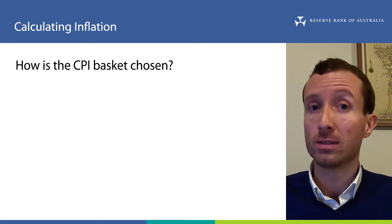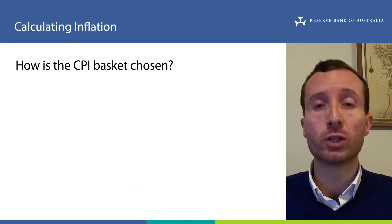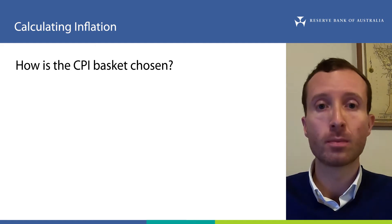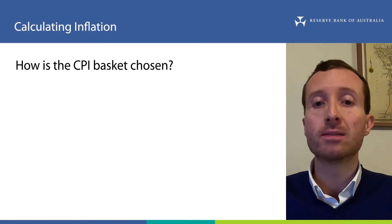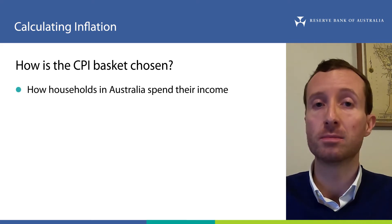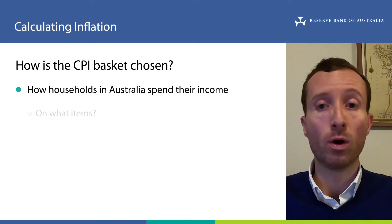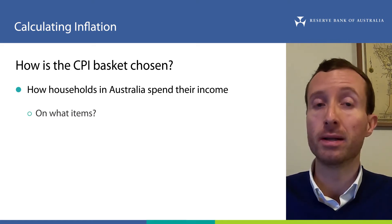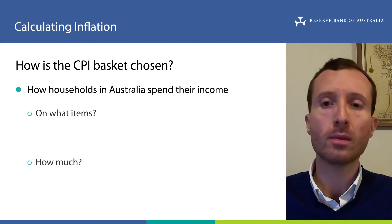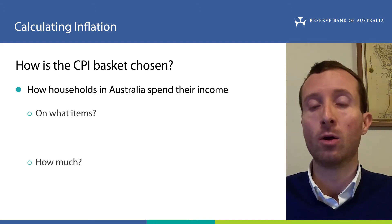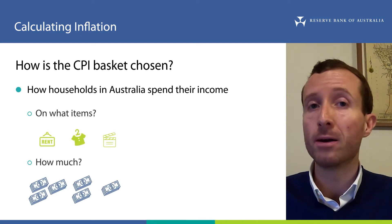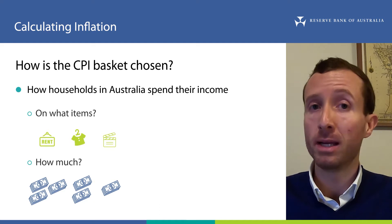To understand how inflation is calculated, the first question is: how does the ABS choose the items in the CPI basket? For this, the ABS uses information about the way the average household in Australia spends its income. The ABS looks at what items households spend their money on and how much they spend on each item. For example, think about rent, clothes, movie tickets, and many other goods and services.